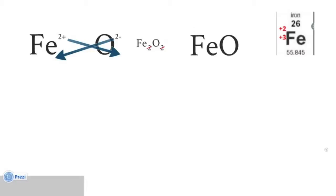Now how do we say this? We say iron Roman numeral 2 oxide and you say it that way because the charge of the cation is plus 2.